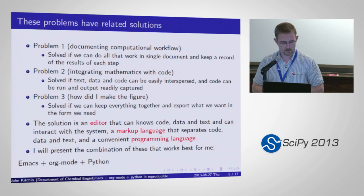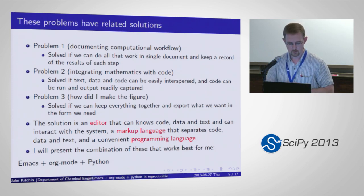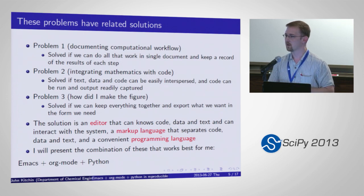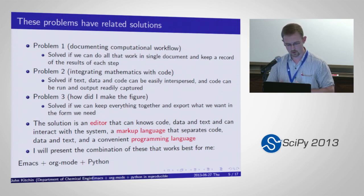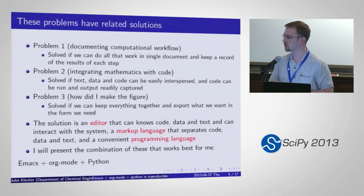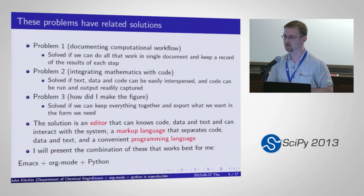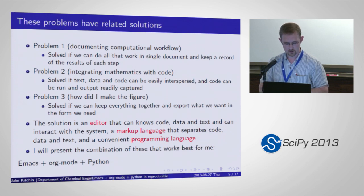When I think about these things, these problems all have related solutions. Number one, documenting computational workflow: I could solve that if there was a way I could have a document that had all of the commands, all of the scripts that I ran, organized in a way I knew how to read — I could run that from the document and capture the output. The second problem would be solved if I could integrate and intersperse text, data, and code all in the same document where I could run the code and capture the output right in the document. And the third problem would be solved if in the manuscript itself there was actually the script and data that ran to make that figure. So that's what I'm going to tell you: I have today a solution for all three of these problems.